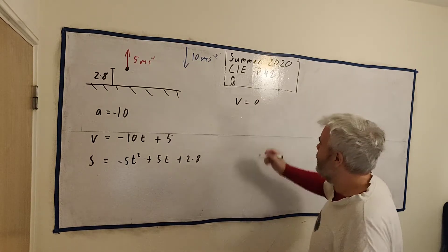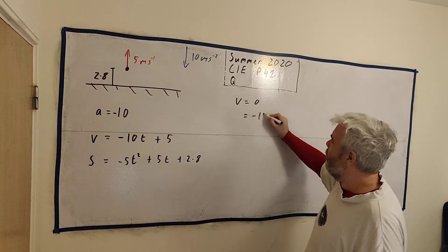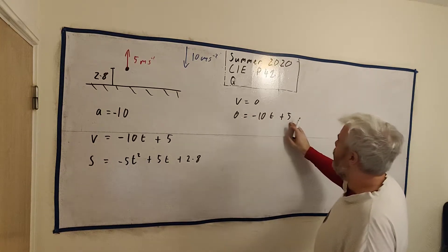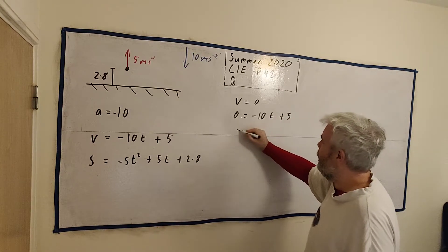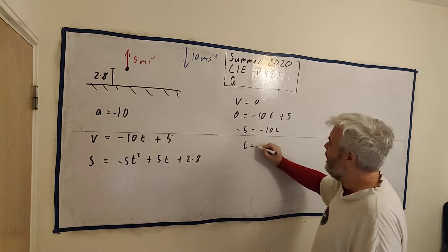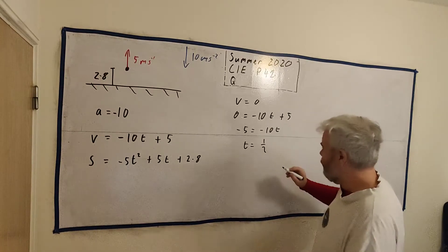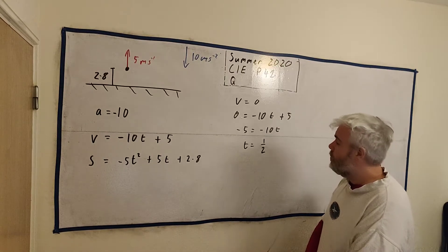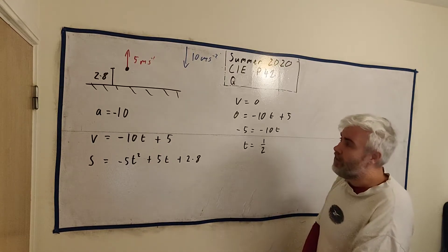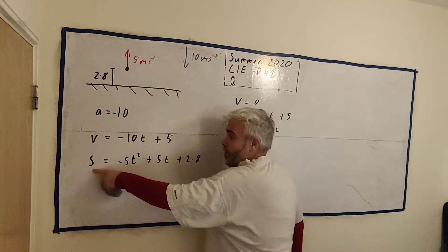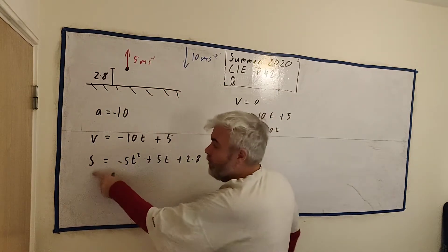So that means V equals 0, which is equal to minus 10T plus 5. Let's rearrange this. We'll get minus 5 equals minus 10T, so that means T equals a half. Now that doesn't tell us the height, but it tells us what time the height is at. So when time is half a second, we will be at the greatest height.